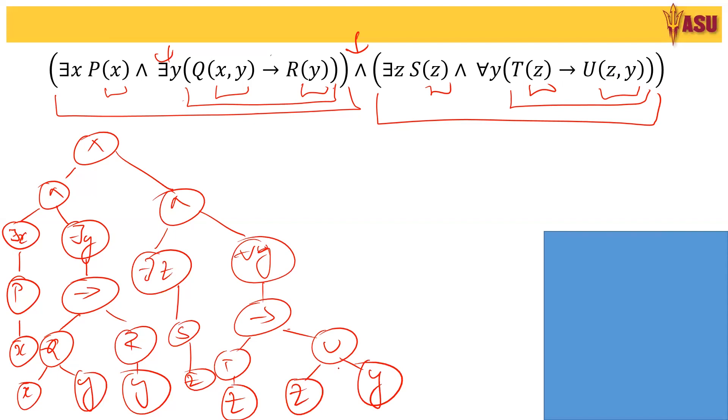And as a quick recap, you should notice that the values that are inside is called arity. And Q of x, y implies Q is of arity 2, whereas R is of arity 1. So this is the tree, subtree.